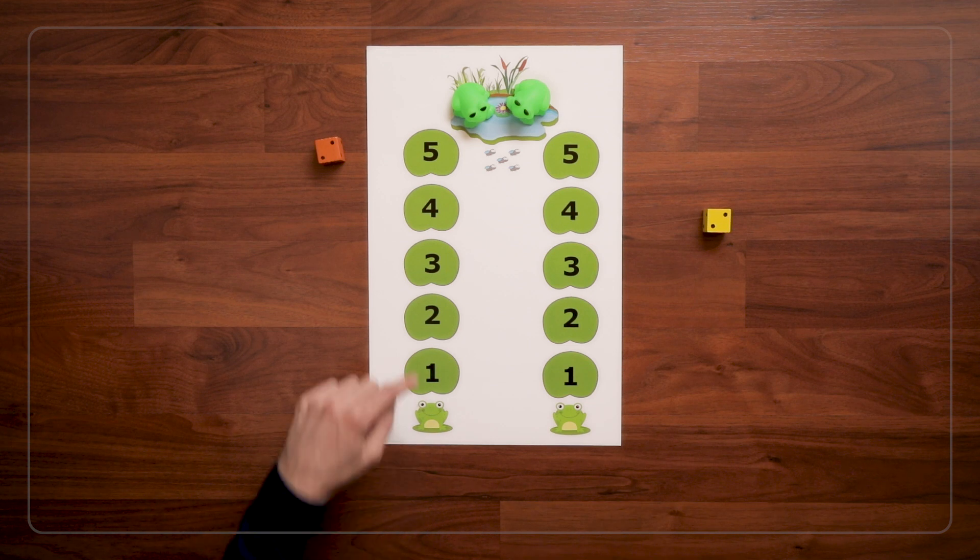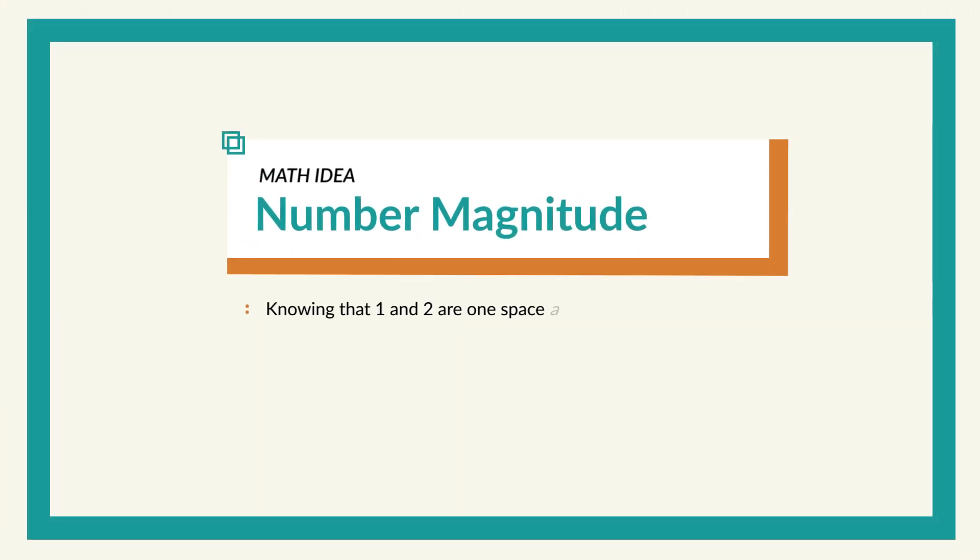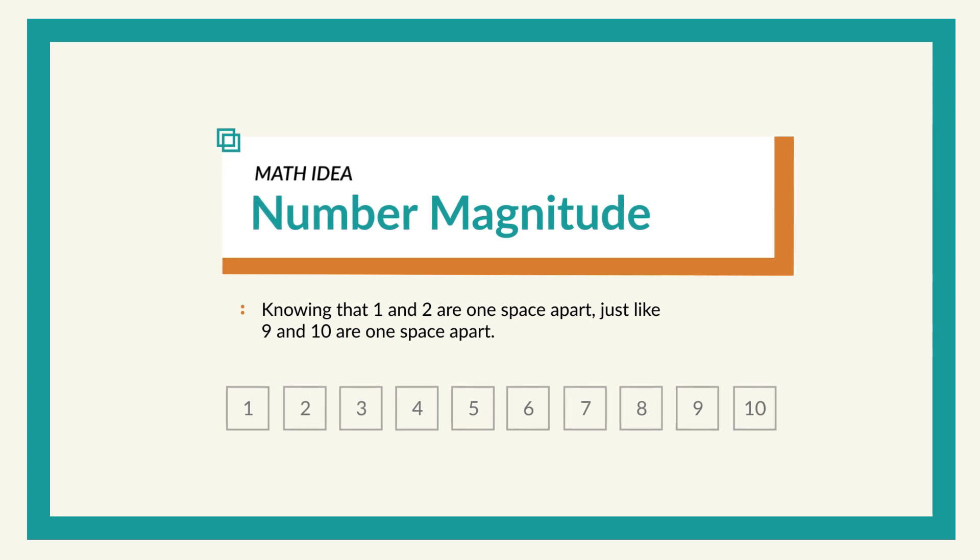This game also helps kids understand that numbers are spaced equally apart. One thing that's really important in early math is the idea of number magnitude and comparing numbers, knowing that the 2 is one more hop than the 1. Just like the 10 is one more hop than the 9.